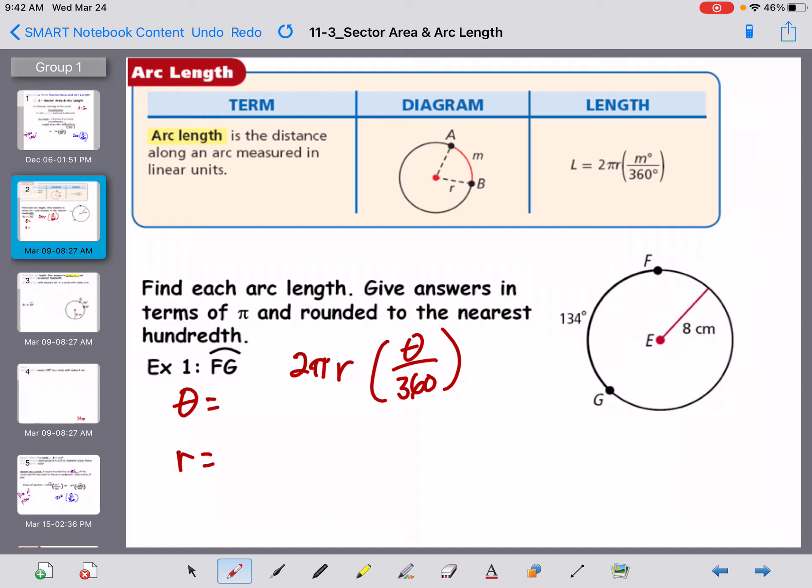So here's what we do. We need a couple of things. First, in our formula, we use theta. So our formula is 2 pi r, where r is the radius. The angle, which is theta, 360 degrees. So we have to know theta, and we have to know r. Everything else, we have a button we can push. So when I look at my picture here, what is this telling me? Find each arc length, give answers in terms of pi, and round it to the nearest hundredth.